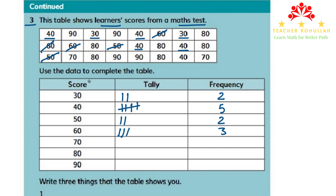Now we look for 70. We don't have any students who scored 70 in the first or second row. In the third row we find 1, and 1 more in the last place, so 2 students scored 70.